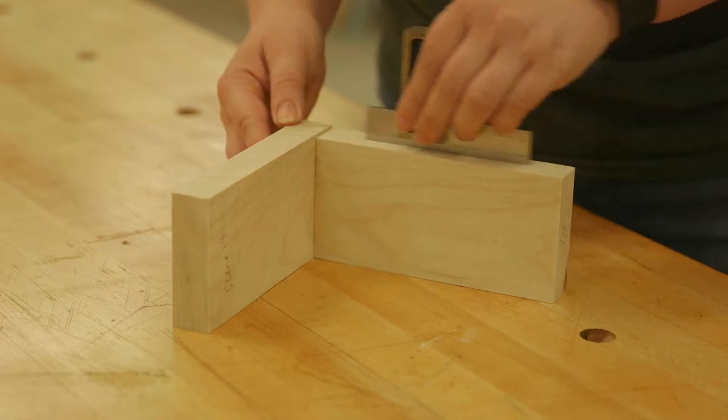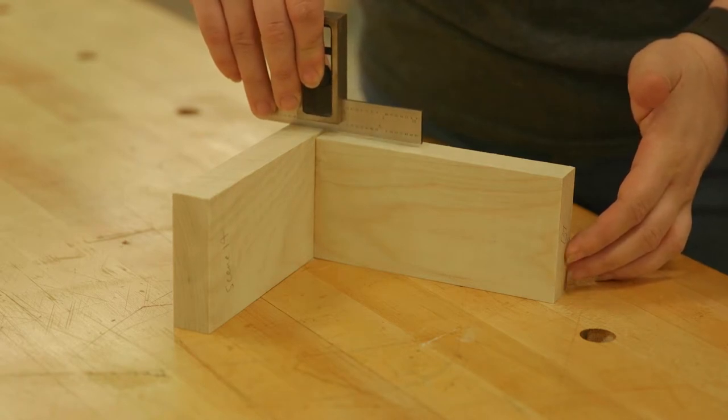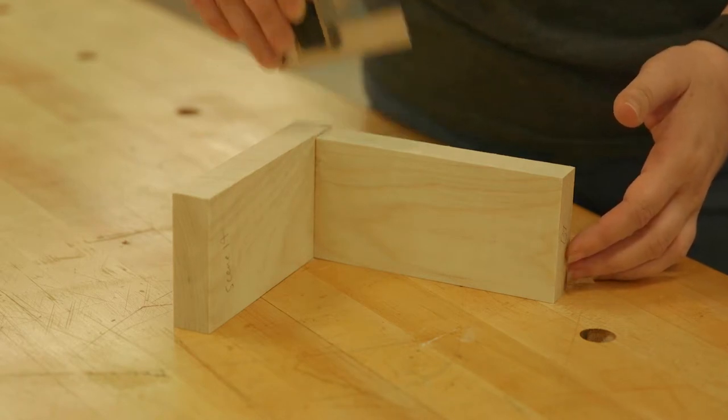Keep in mind that if you will do any final sanding to make a butt joint flush or flat, you'll want to have a little extra material to sand away.